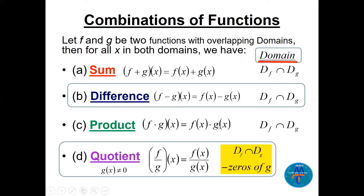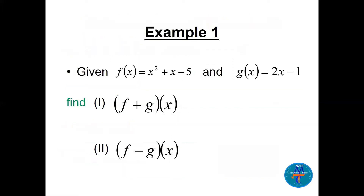If you multiply two functions, you get another function and the domain is the same. Only when we divide — which we call the quotient, f divided by g — the domain is almost the same: domain of f intersection domain of g, but we must also remove the zeros of g. Every number that makes the denominator zero is removed from the domain.